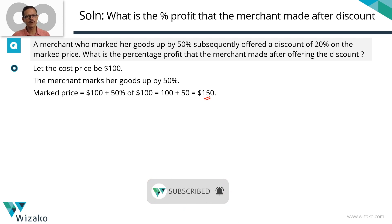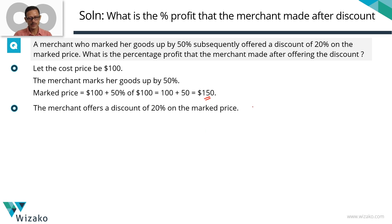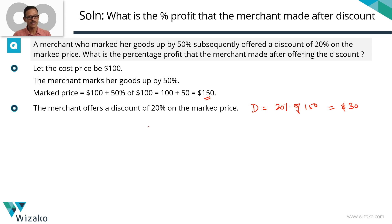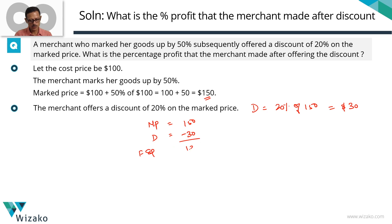A discount of 20% on the mark price is offered, and the mark price is $150. So the discount equals 20% of 150. 10% of 150 is 15, so 20% equals $30. The discount offered is $30. Mark price is $150 minus discount of $30, so the final selling price is $120.